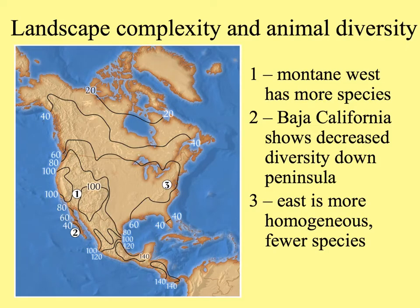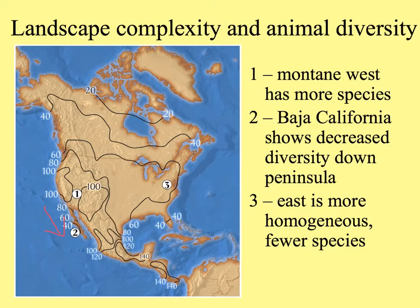In general, the more complex the landscape, the higher the diversity of animals. In this map of the U.S., we can see several distinct patterns. In the western part of the U.S., there are more species of animals, largely because of the Rocky Mountains and the Sierra Nevada — a lot of topographical relief providing a wide diversity of habitats. As we go down the Baja Peninsula, animal diversity decreases. In the east, Florida shows the peninsular effect too, but in general the east has fewer species. The Smoky Mountains are there, but they're older, shorter, and not quite as much relief as in the western mountains.